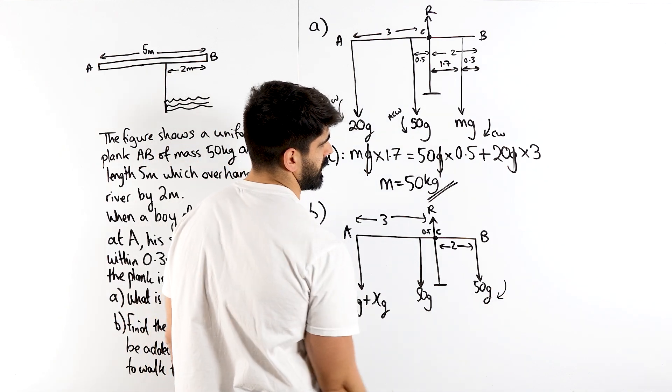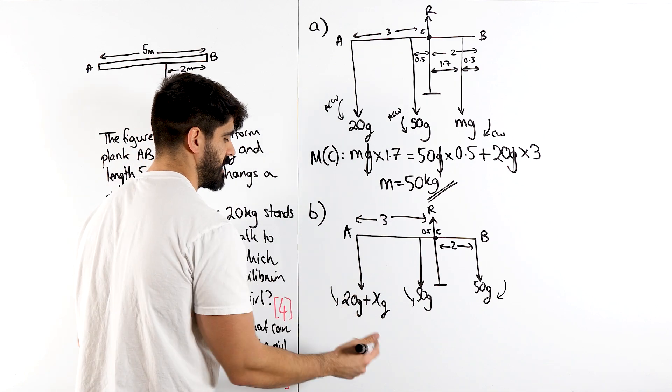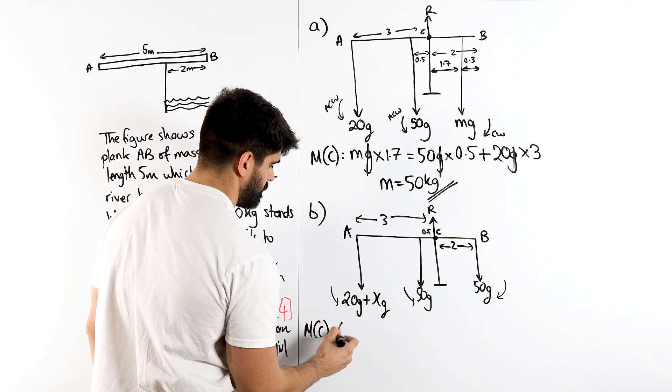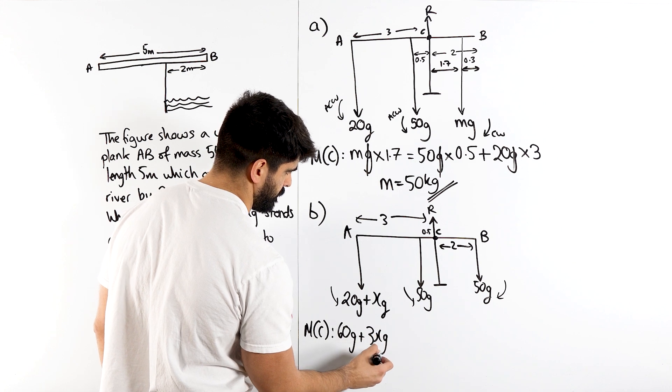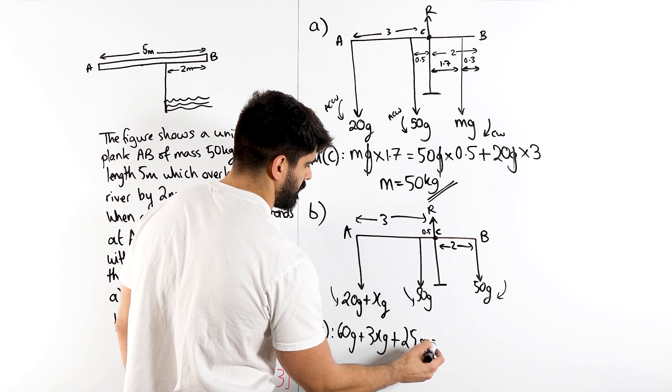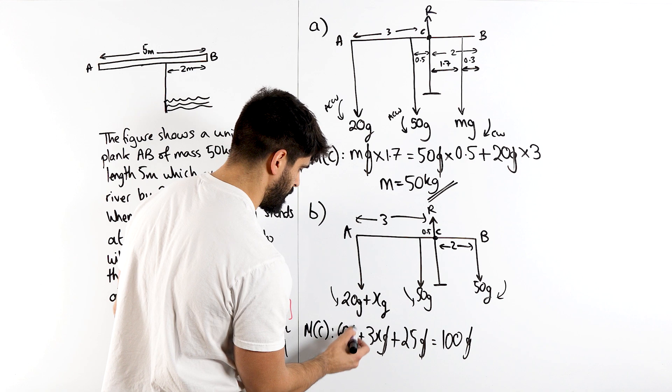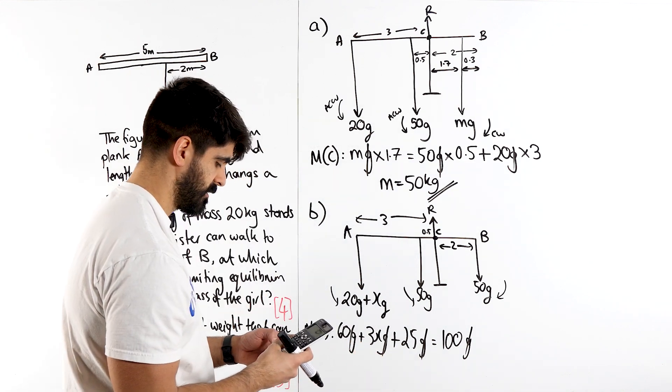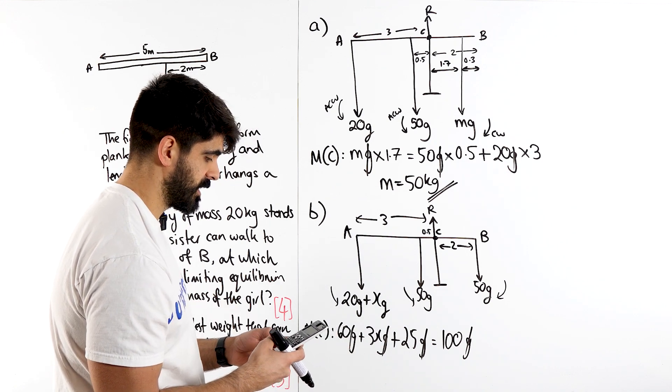This is still your clockwise. These are your anticlockwise. Because we're going to work out X, let's do the anticlockwise. So moment around C, 3 times 20G is 60G plus 3 times XG, 3XG. And 0.5 times 50G is 25G equals 2 lots of 50G which is 100G. Let's cross off the Gs. 60 plus 25. 100 minus that is 15. 15 divided by 3. X is 5.